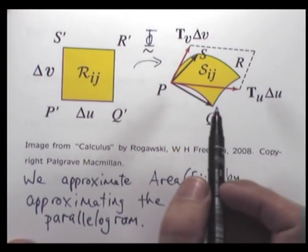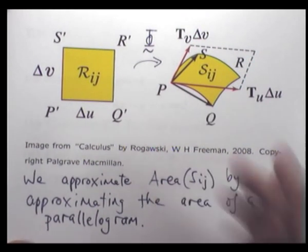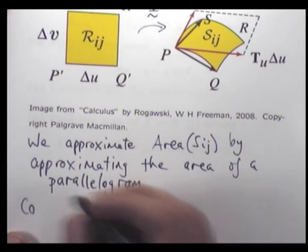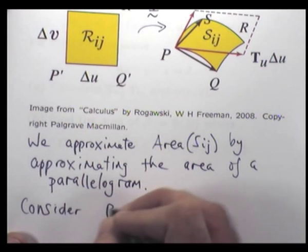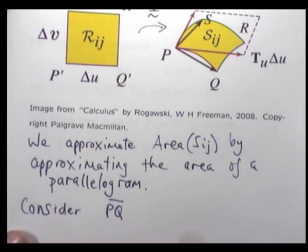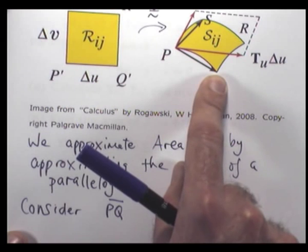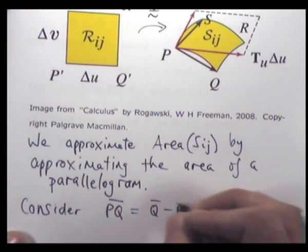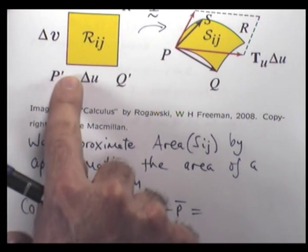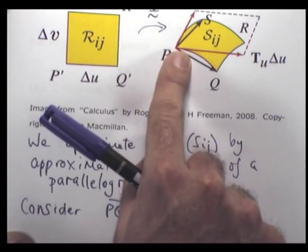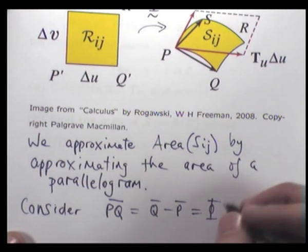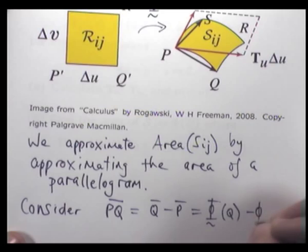Let's think about the vector PQ. PQ is just vector Q minus vector P. P-dash maps to P under our parametrization; Q-dash maps to Q. So we can write this vector in terms of our parametrization.